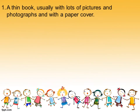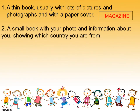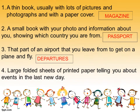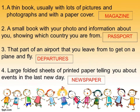Let's look at my answer. Do you have the same answer? Number one — a thin book, usually with lots of pictures and photographs with a paper cover. This is a magazine. Number two — a small book with your photos and information about you, showing which country you are from. This is a passport. Number three — the part of an airport that you leave from to get on a plane and fly. This is departures. Number four — large printed sheets telling you about events in the last few days. This is newspaper. Do you have the same answer with me? Well done, everyone!